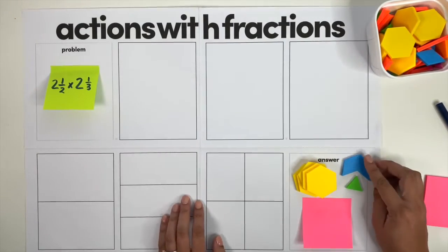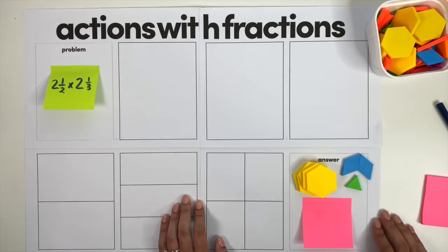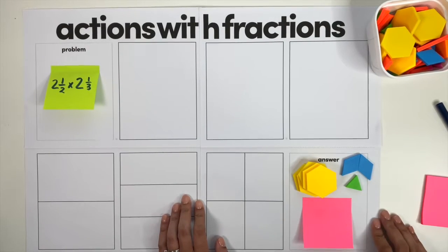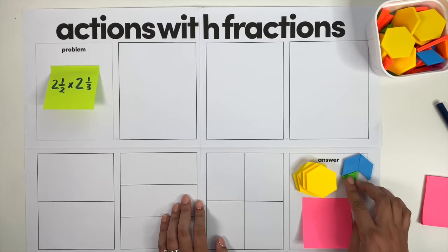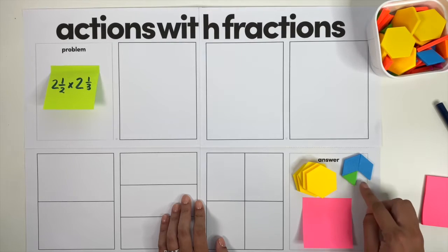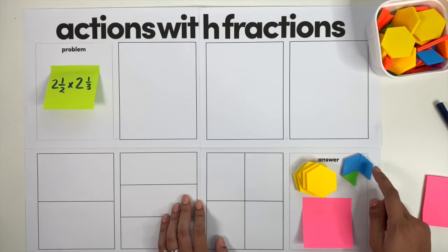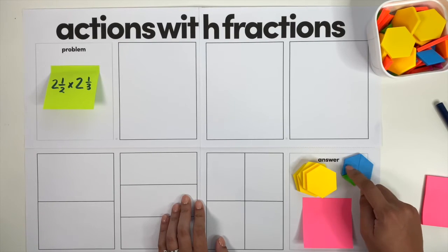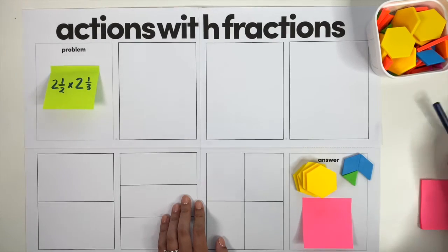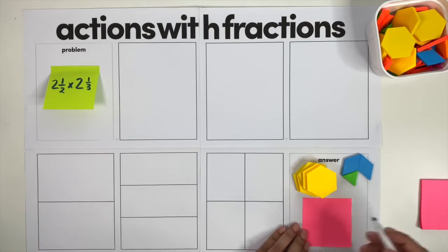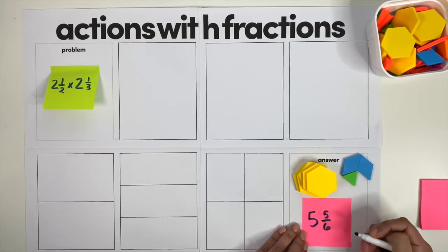Looking at these pieces, this is one sixth away from a whole, so counting carefully: five wholes and five sixths. Or I could exchange each of the thirds for two sixths, giving me the fifth sixth. Either way, my answer is five and five sixths.